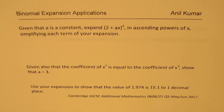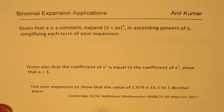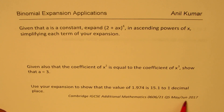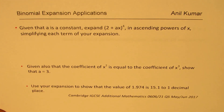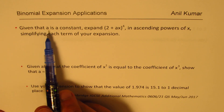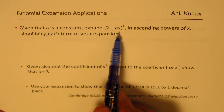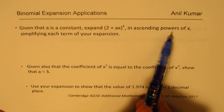I'm Anil Kumar, welcome to my series on global learning. The idea here is to look into mathematical concepts which are being treated in different ways in different parts of the world. Here is question number five from a Cambridge IGCSE Additional Mathematics test paper of 2017. It has three related parts: given that a is a constant, expand (2 + ax)^4 in ascending powers of x, simplifying each term.